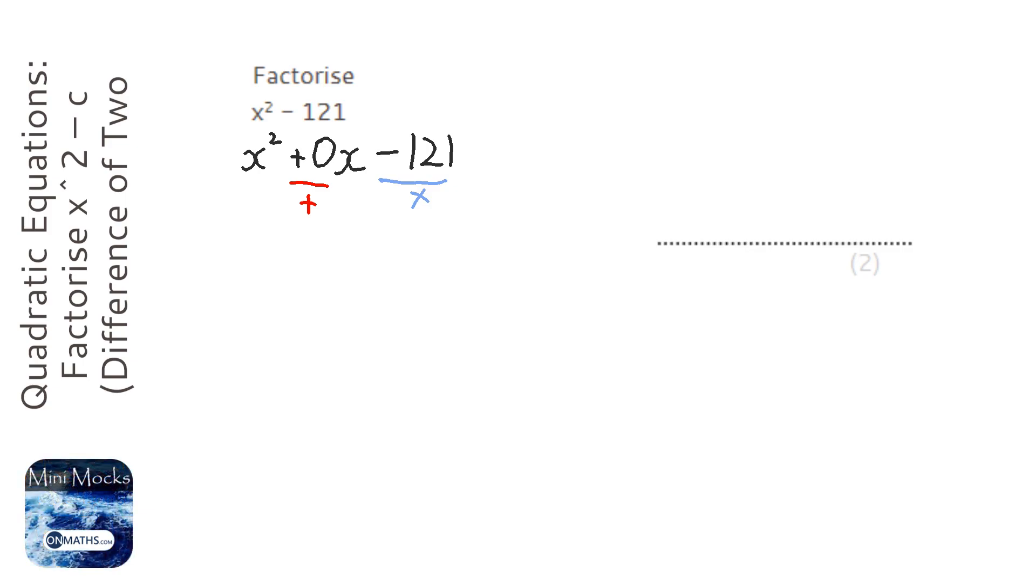The only way you can get two numbers that add together to make 0 is if they're exactly the same number, but one's positive and one's negative. So they're going to have to be the same number.